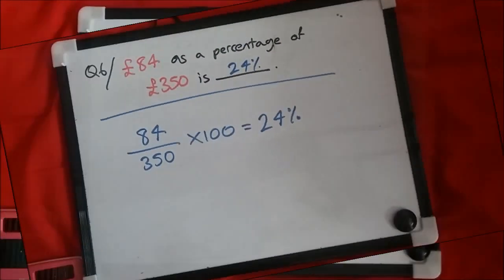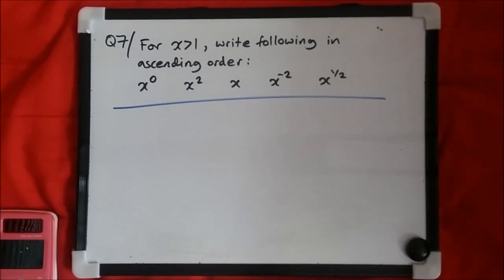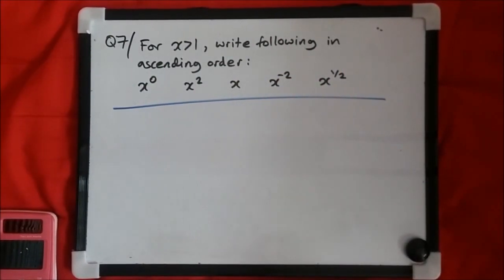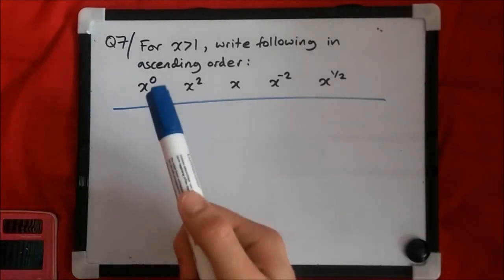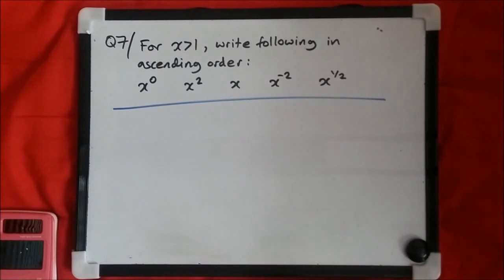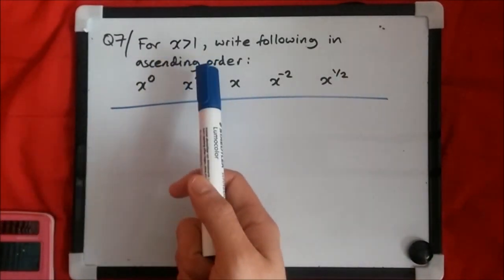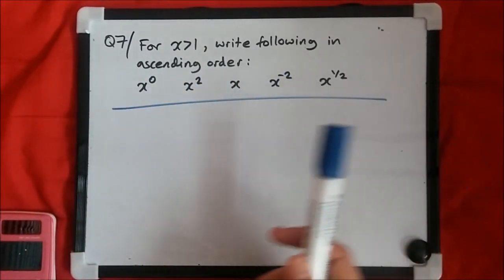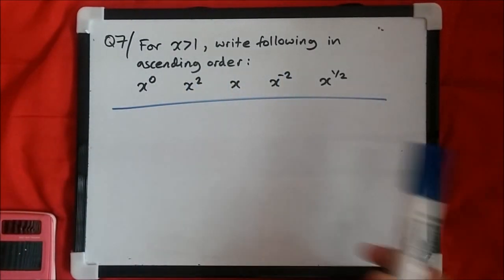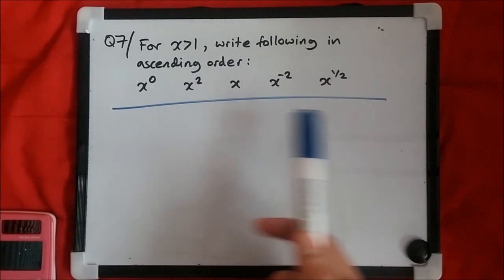Now let's move on to question 7. Just by looking at this we can tell this is a very mathematical question, unlike the previous ones. For mathematicians this will be dead easy; for non-mathematicians you just have to follow the rule. So: for x greater than one — in other words for any number bigger than one like 1.1, 2, 3, and so on — write the following in ascending order.